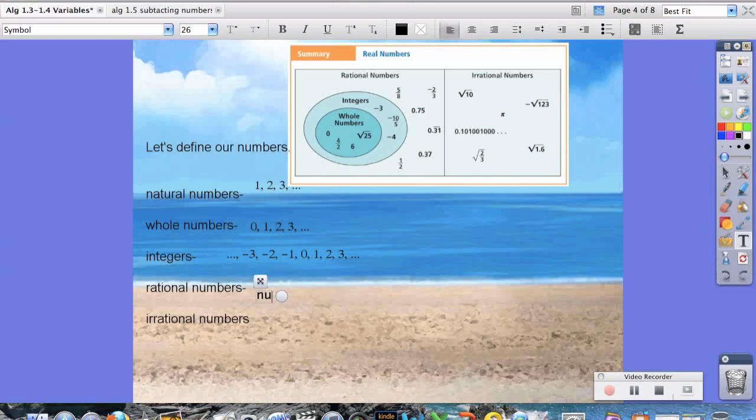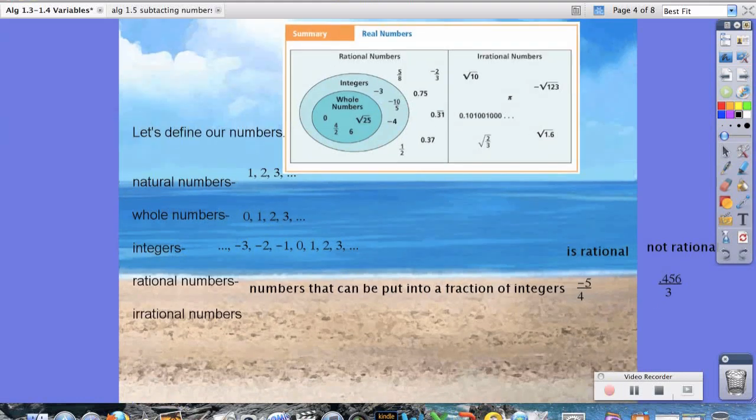So rational numbers are numbers that can be put into a fraction of integers. For example, negative 5 fourths is a rational number, but what's not rational are numbers like 0.456 divided by 3. Now notice in this case we have a fraction, but they're not a fraction of integers. Therefore, the one on the right is not rational.